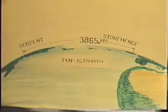For example, it was the reason why Stonehenge and the serpent mound are where they are, separated by 3,865.14 statute miles. The tangent of which is Kifrin's longitude.